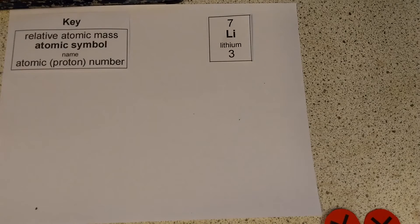So today we're going to look at how we can use the periodic table to help us figure out the numbers of the three subatomic particles in the atom, so the three little parts that make up every single atom.